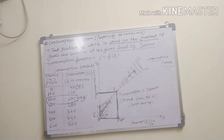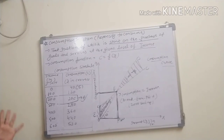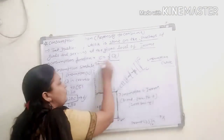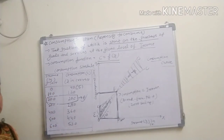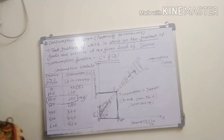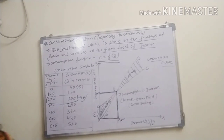That is all about the consumption function. Consumption function is simply C = f(Y), meaning consumption is based on the consumer's income. Thank you, have a nice day.